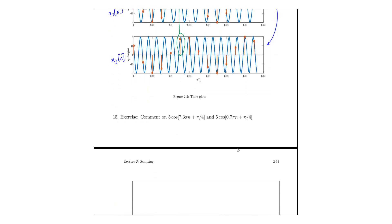Now that we have discussed this example in great detail, I will give this as an exercise for you to practice. The question is: comment on these two signals — 5·cos(7.3πn + 5π/4) and 5·cos(0.7πn + 5π/4) — and determine which of these signals will be aliased. Do let me know in the comment section whether you are able to solve it. If not, let me know so that I can solve it in the next lecture. Thank you so much for watching. See you next time. Bye.